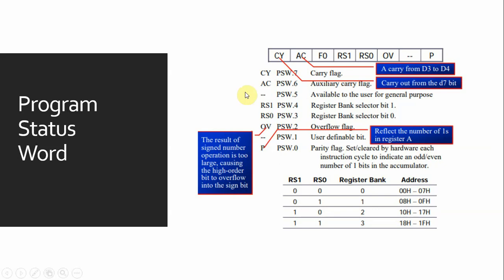Here you can see that CY or PSW.7 is the carry flag. This is the auxiliary carry flag, also referred as PSW.6. PSW.5 is available to the user for general purpose.